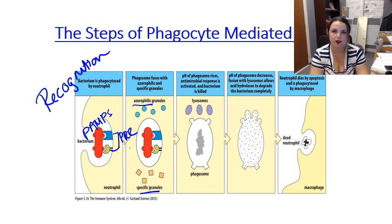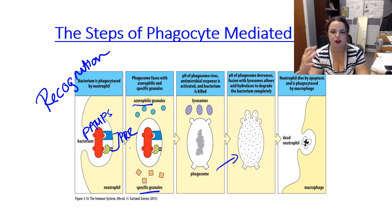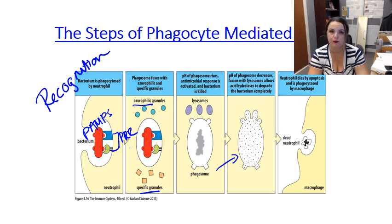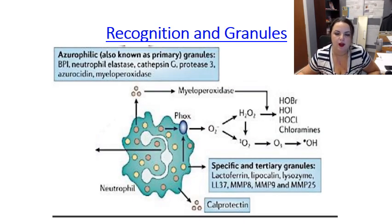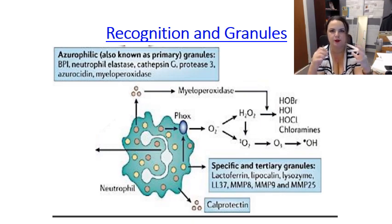The work of these granules changes the pH in the phagosome to a more lytic environment. The phagosome also fuses with a lysosome, creating a phagolysosome. Once that occurs, reactive oxygen species can be generated, leading to death of the cell. In some cases, only the pathogen dies; but if the reactive oxygen species pathway is activated, the neutrophil dies too and is later picked up by a macrophage.